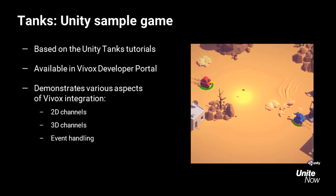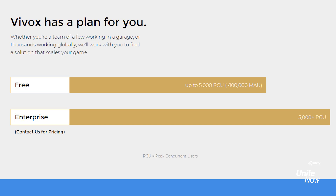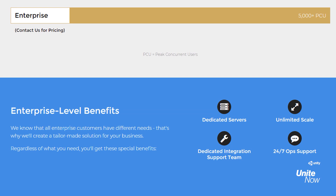There's a lot more to discover in the sample, so go ahead and download it now. To wrap up, I have great news: we want to enable creators of all sizes to use our best-in-class tools, just like the AAA games using Vivox today. So we have a free tier available — the service is free for games with up to 5,000 peak concurrent users per month, and you'll only get charged for usage once your game has over 5,000 users playing at the same time. For those who want to take it up a notch with our enterprise plan, you'll get dedicated servers, unlimited scale, a dedicated integration support team, and 24/7 ops support.